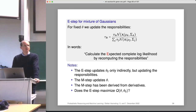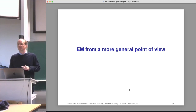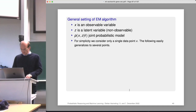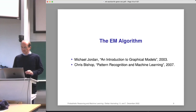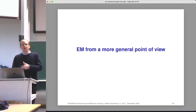Now let's look at expectation maximization from an even more general point of view, to understand the M-step and E-step better. This general setting comes from Mike Jordan's book — an introduction to graphical models from 2003. It's useful to think about it very generally, because then you can apply it to new problems beyond the Gaussian mixture model.